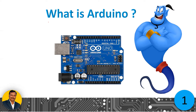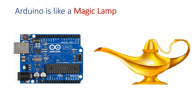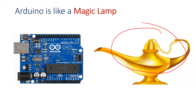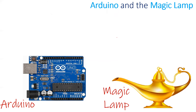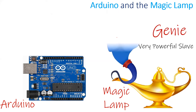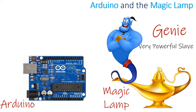Hello, welcome to Arduino tutorials. In this class we will see what is Arduino. Arduino is similar to Aladdin's magic lamp. This magic lamp is so powerful that it can fulfill all your wishes. What is inside the magic lamp? This magic lamp has a very powerful slave called genie, and this genie is so powerful that it can fulfill all your wishes.